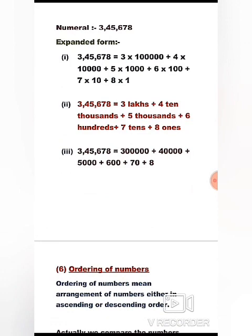Our numeral given here is 3,45,678. In the first way, we write the expanded form by multiplying the digit with the place value. So 3,45,678 is equal to 3 × 1 lakh + 4 × 10,000 + 5 × 1,000 + 6 × 100 + 7 × 10 + 8 × 1.